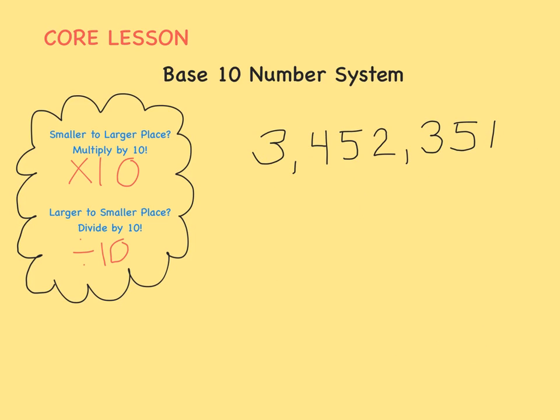In our final example, let's compare the 5 in the 10,000th place to the 5 in the 10s place. What's the value of each digit? The 5 in the 10,000th place has a value of 50,000. The 5 in the 10s place has a value of 50. This time, we're dividing by 10 one, two, three times.